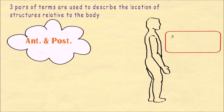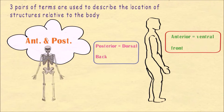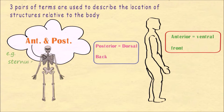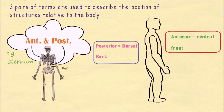There are several anatomical terms. The first are anterior and posterior. Anterior is also known as ventral, which means structures lying in front. Posterior is also known as dorsal, which means structures present behind or at the back. For example, the sternum lies anteriorly and the vertebral column lies posteriorly.